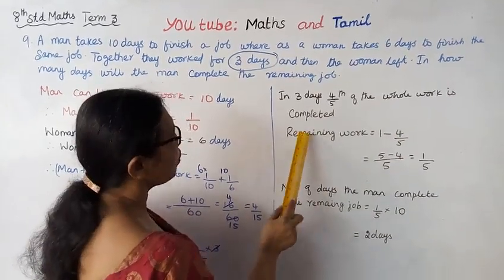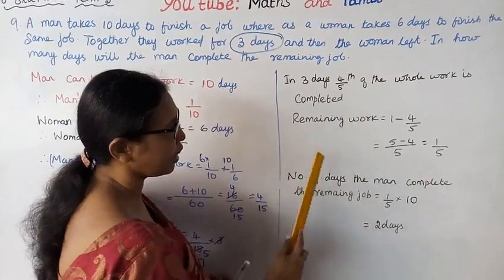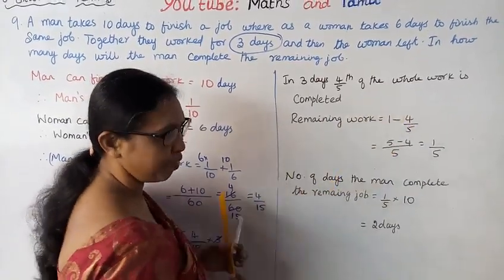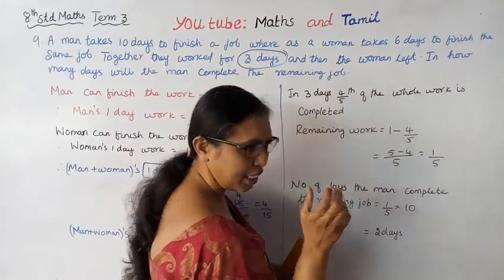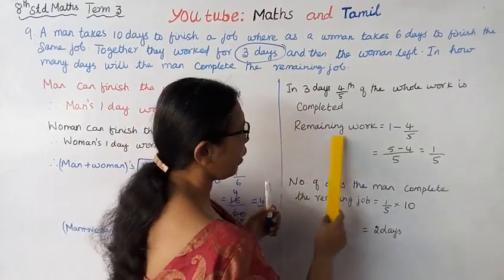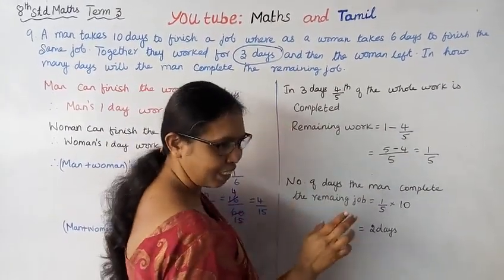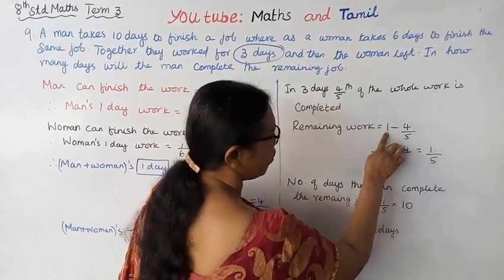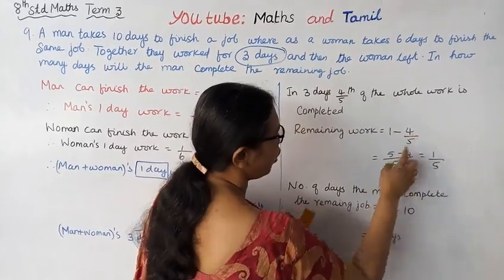The remaining work is 1 minus 4/5. Since the whole job equals 1, the remaining work is 1 minus 4/5.